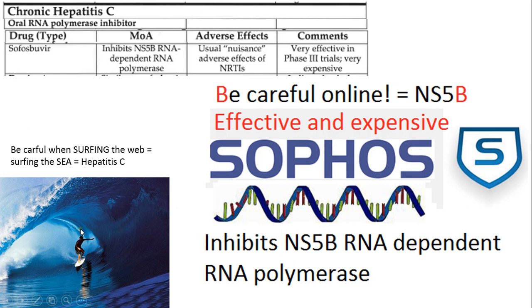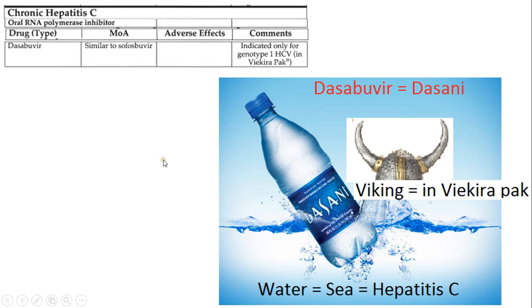Sofosbuvir inhibits NS5B RNA-dependent RNA polymerase, so there's a picture of a strand of RNA to help remember that. The last drug is dasabuvir — 'dasa' is like Dasani water. Water comes from the sea — hepatitis C. This is also only available in the Viekira Pak, like paritaprevir. It is indicated only for genotype 1 HCV. And that is the end.